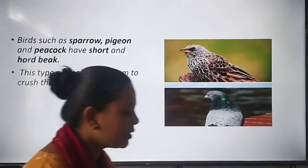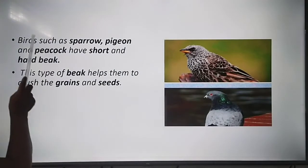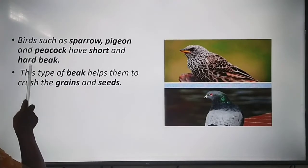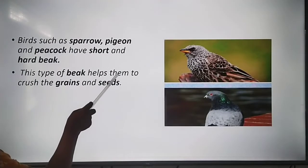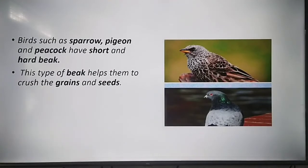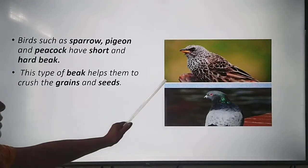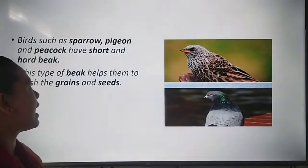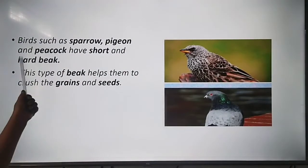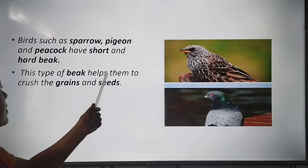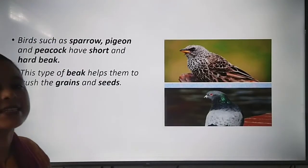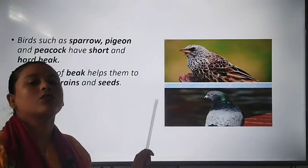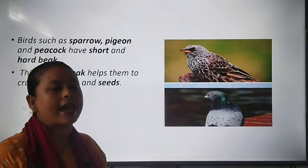First, the hard and short beak. Birds such as sparrow, pigeon, and peacock have a short and hard beak. This type of beak helps them to crush grains and seeds. So this short and hard beak helps these birds to crush grains and seeds as their food.